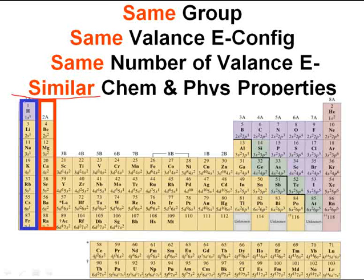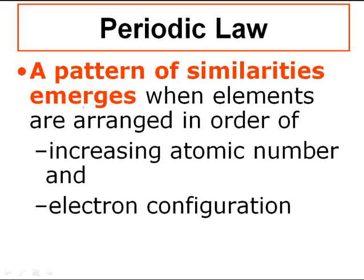So all the elements in group 1 are S1s — 1S1, 2S1, 3S1 — in their outer shell. Because they have the same valence electron configuration and the same number of valence electrons, they'll have similar, not the same, chemical and physical properties. The way the modern periodic table is arranged, we end up seeing similarities within these groups, and that's why we call them families.